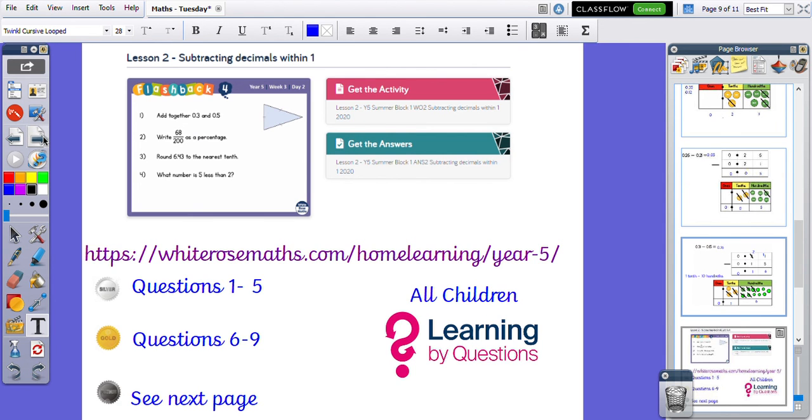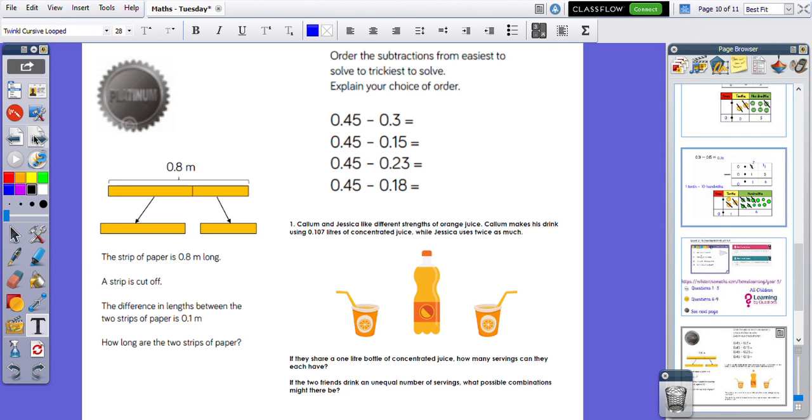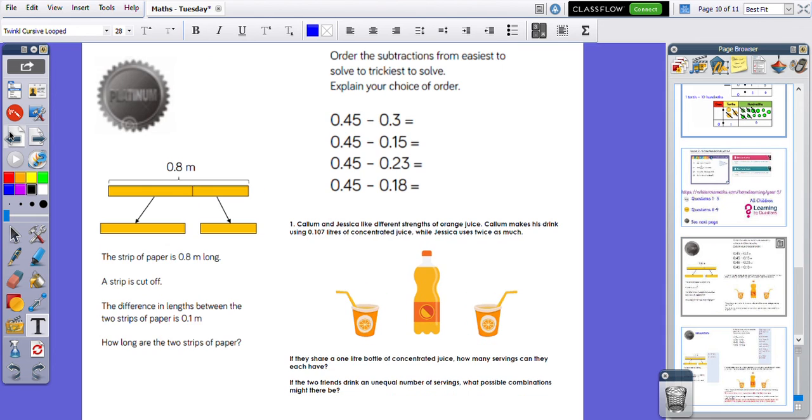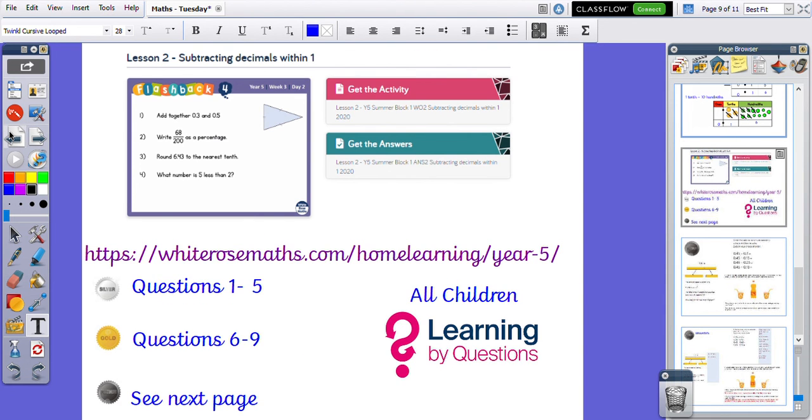So today you are on summer week 1, lesson 2, subtracting decimals within 100. Silver is questions 1 to 5. Gold is questions 6 to 9. Platinum is on the next page. I have also put the answers on the last page for you. Once you've finished platinum, you can scroll down and your answers are there to mark. There is a learning by questions for all children. Please let Mrs. Willis and I know if you've got any problems or you need help with anything and we will try and help you the best that we can. Thank you. Bye.